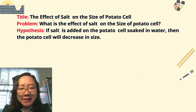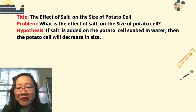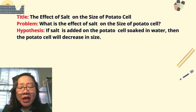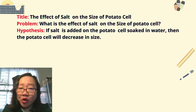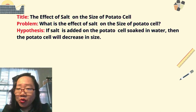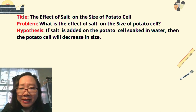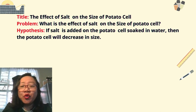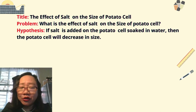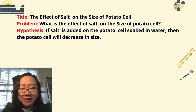Next, formulate the hypothesis. Remember our formula: in formulating an experimental hypothesis, use the if-then statement. So: 'If salt is added on the potato cell soaked in water, then the potato cell will decrease in size.' You will predict what will happen to the potato if you add salt on it.